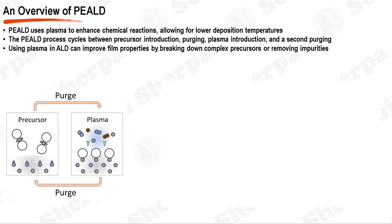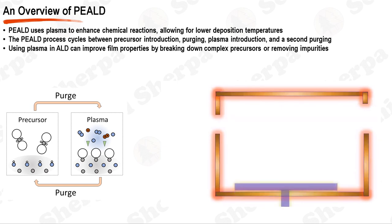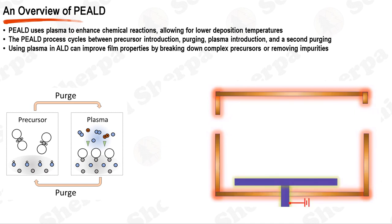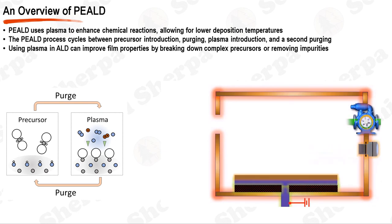Atomic layer deposition, ALD, is a method used to deposit thin films onto a substrate with atomic level precision. Plasma-enhanced ALD, PEALD, also known as plasma-assisted ALD, is a variant of this technique that uses plasma to enhance the reaction between precursor molecules and the substrate surface, allowing for lower deposition temperatures and improved film properties. In a PEALD process, the first step involves the introduction of a precursor, typically a metal-containing compound, in gaseous form to the substrate surface. This precursor reacts with the surface to form a single atomic or molecular layer. The system is then purged to remove any unreacted precursor molecules and byproducts, preserving the self-limiting nature of the process.